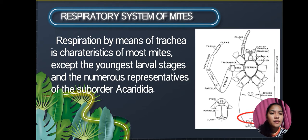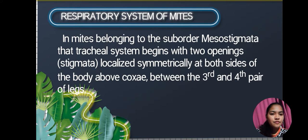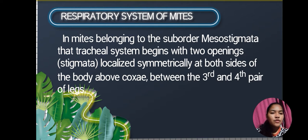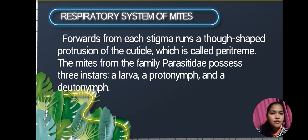Respiration by means of trachea is characteristic of most mites, except the youngest larval stages and numerous representatives of the order Akaridida. In mites belonging to the suborder Mesostigmata, the tracheal system begins with two openings localized symmetrically at both sides of the body, above the coxae, between the third and fourth pair of legs.